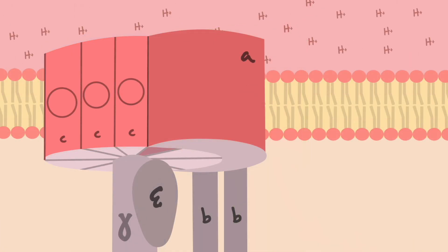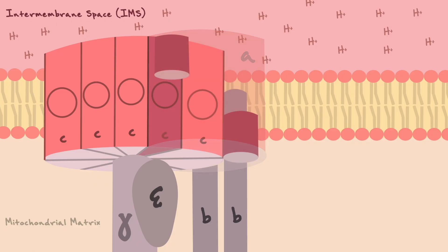Just to get orientated quickly, the membrane that is shown here represents the inner mitochondrial membrane which separates the intermembrane space filled with protons from the mitochondrial matrix. In this illustration, you can see the multiple C subunits that form the rotatory C ring.